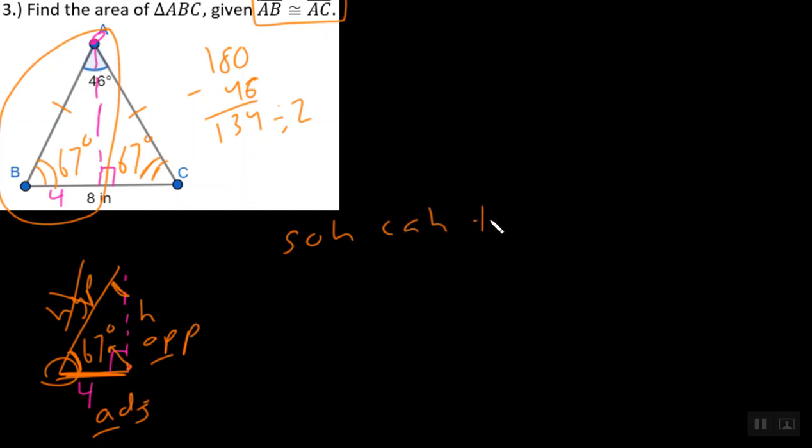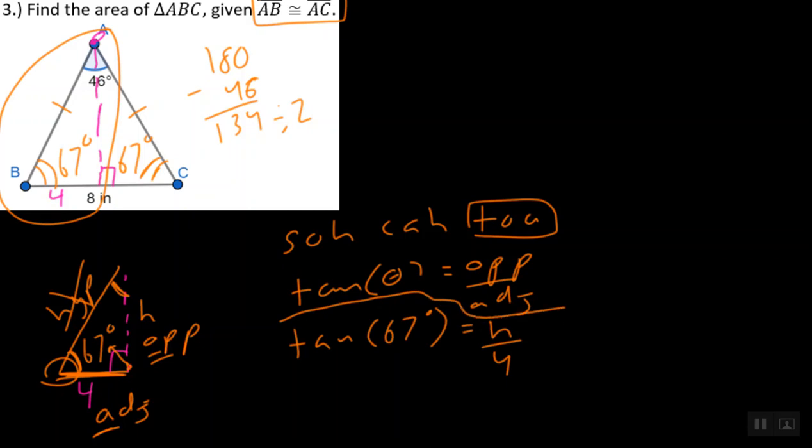And so from here, with our adjacent and our opposite, remember, we always want to write Soh-Cah-Toa. But with our O and our A, we're looking at the Toa, or the tangent of, or I'm sorry, tangent theta is equal to the opposite over the adjacent. And let's fill in all of our information. We know that our theta, the angle, is 67 degrees, is equal to our opposite H over our adjacent 4. And this is kind of the nice version. When our number is in the denominator, we simply multiply both sides by 4. And we can say, you know what, 4 times tangent of 67 is equal to the height of this triangle.